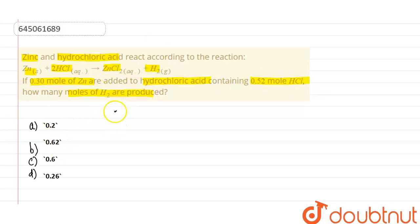Let's start the solution. First, we'll write the equation: Zn reacts with HCl to give ZnCl2 along with hydrogen gas. Now, balancing the equation, we get 2 here. This is the balanced equation. We can see that 1 mole of zinc reacts with 2 moles of HCl to give 1 mole ZnCl2 and 1 mole H2.